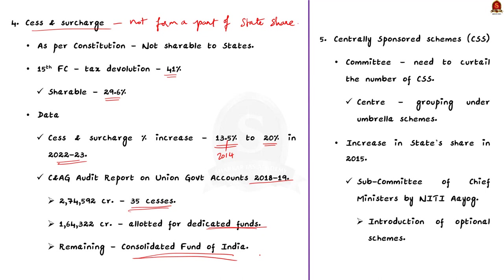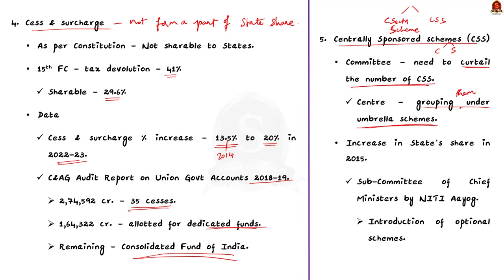Coming to the final issue discussed in the editorial — centrally sponsored schemes. There are two types of schemes: central sector schemes, which are completely funded by the center, and centrally sponsored schemes, whose budget has to be provided by both the central and state governments. Committees appointed by the Government of India have emphasized the need to curtail the number of centrally sponsored schemes, but the union government is grouping them under broad umbrella schemes. Additionally, the center has increased the states' share in centrally sponsored schemes from 2015, which acts as a burden for states.